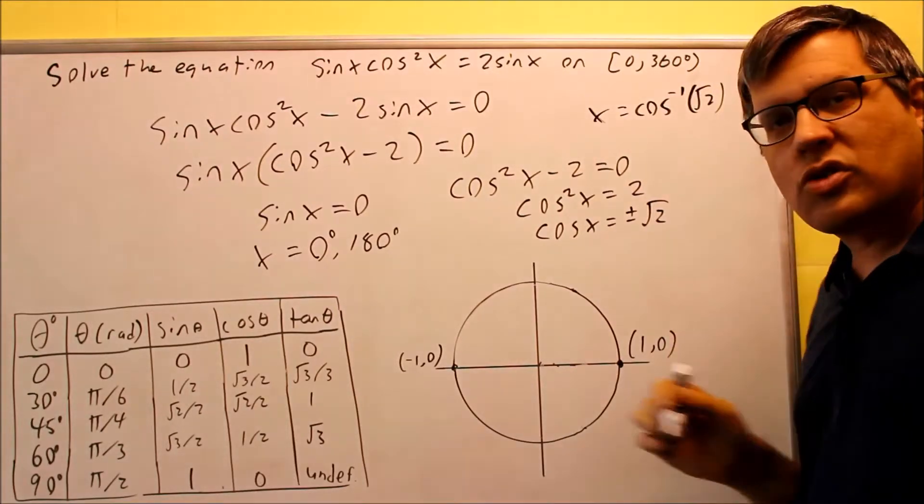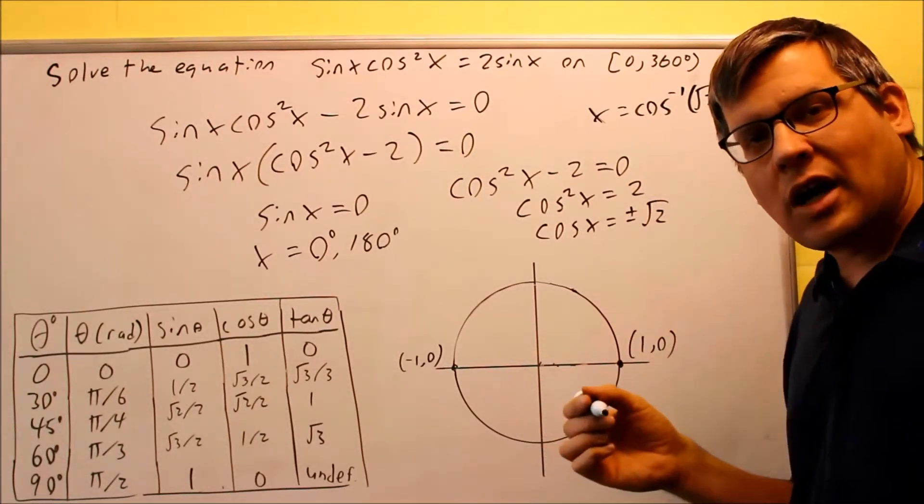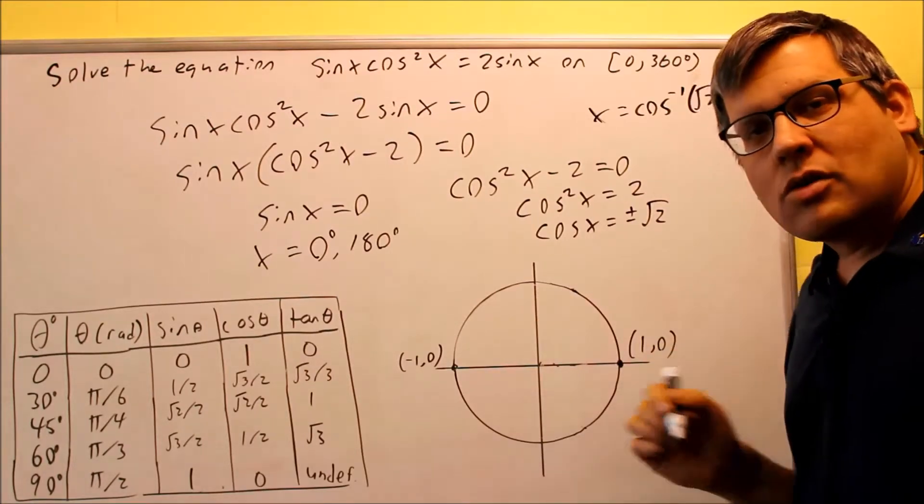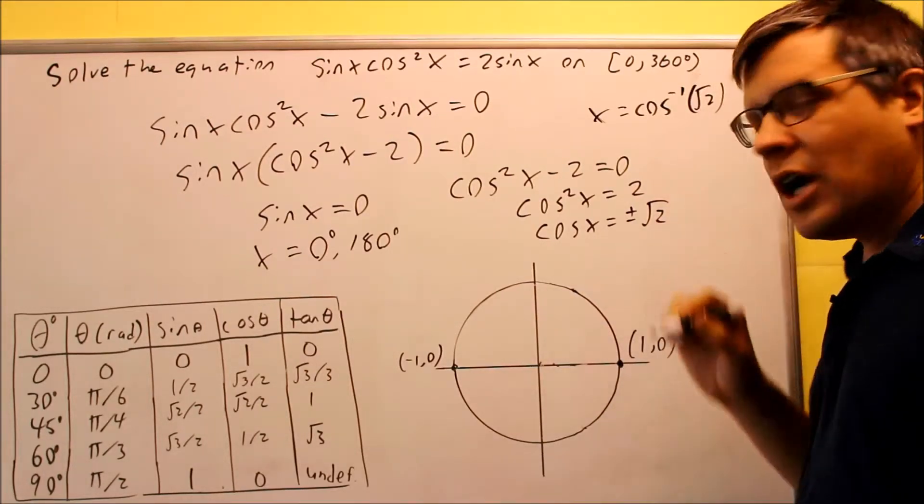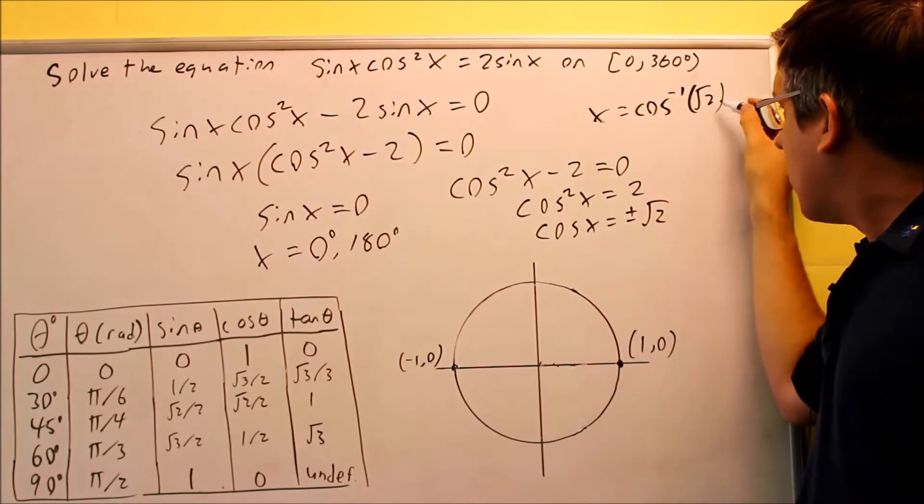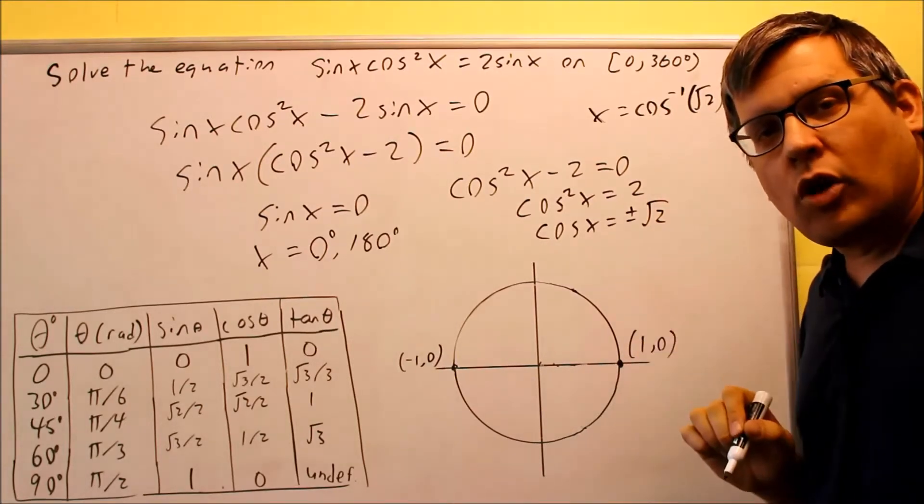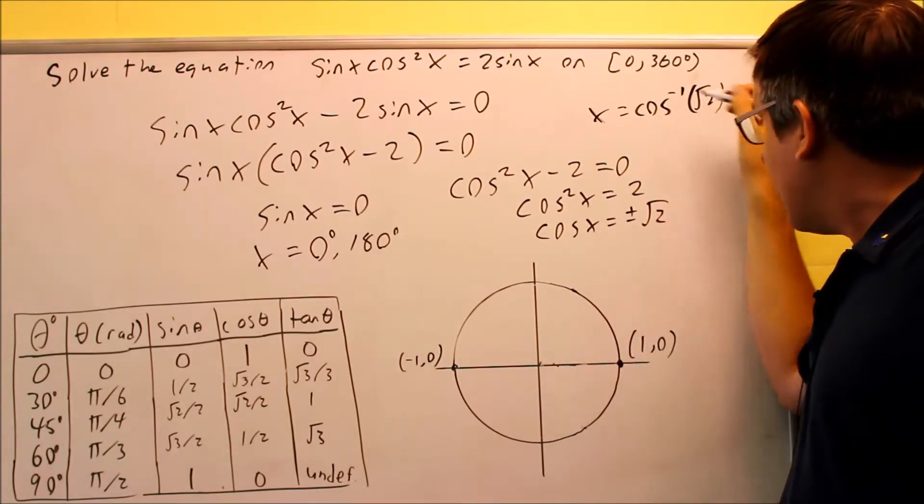So if I try and take the inverse of both sides, I would get inverse cosine of, let's just do the first one, inverse cosine of square root of two. If I try and put that in my calculator, I'm going to get an error. So that means you can't do that because that number has to be between negative one and one because originally it comes off this value.